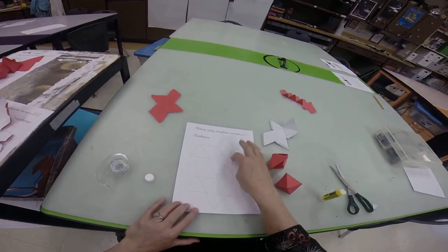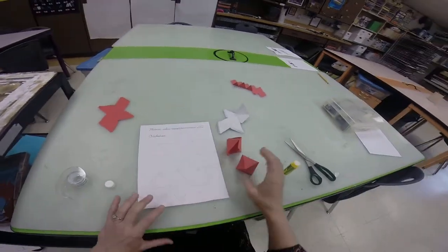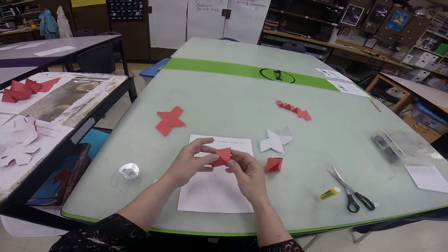Octahedron. This one has 1, 2, 3, 4, 5, 6, 7, 8 sides. It is going to look like this when we're finished.